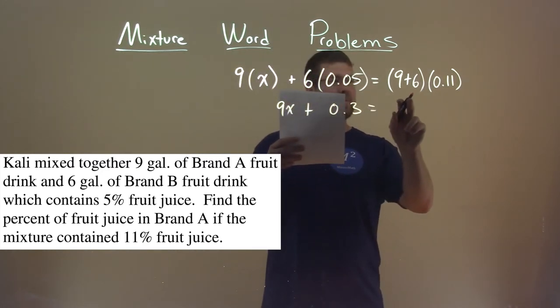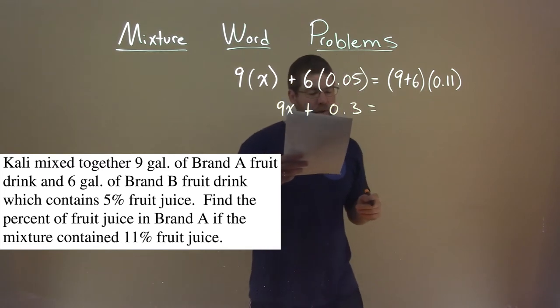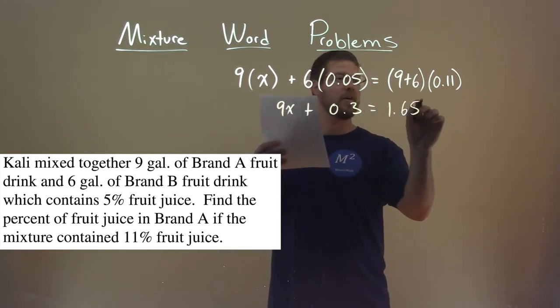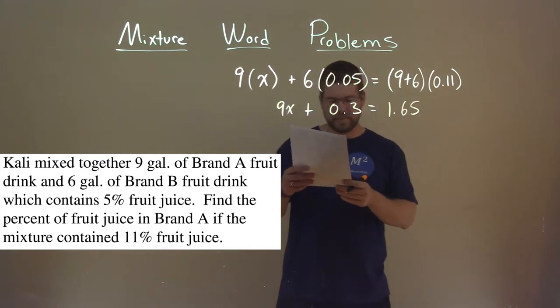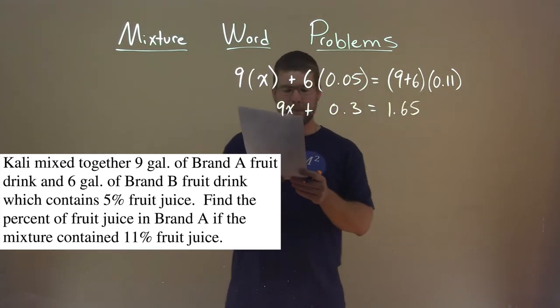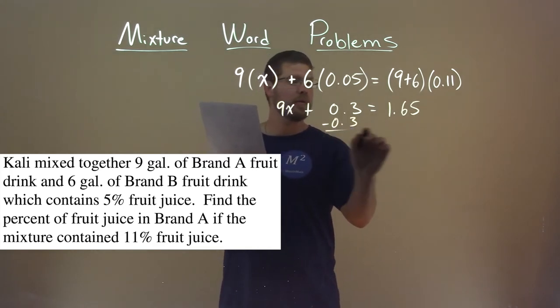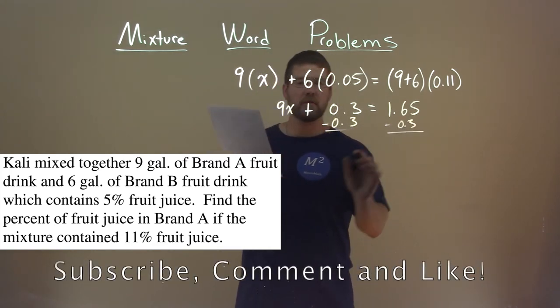9 plus 6 times 0.11 comes out to be a 1.65, so that's 15 times 0.11. Alright, so now we want to look at our like terms together, so we subtract a 0.3 to both sides.